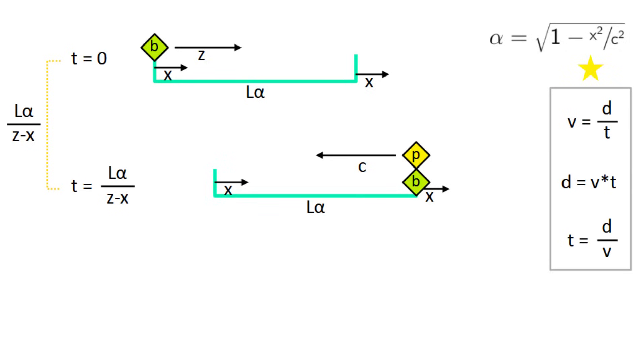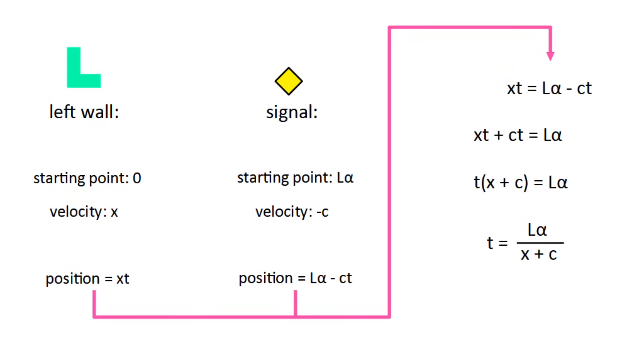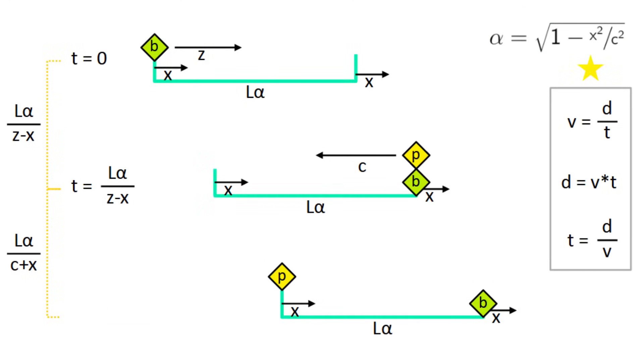Now how long does it take for the signal to reach the left wall? Well, the left wall moves to the right at x, and the signal moves to the left at c, and starts l times alpha ahead. So again, we can form a system of equations. This time, we find it will reach the left wall after l times alpha over c plus x time. In total, it takes l times alpha over z minus x plus l times alpha over c plus x time for the timer to receive the signal.